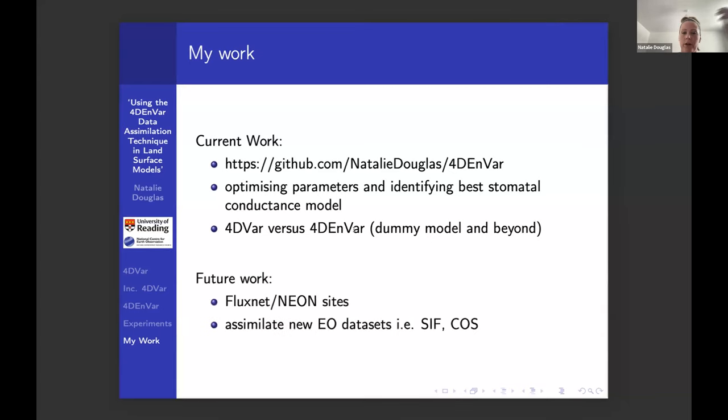Future work will include doing this for the observational information that's already available in some JULES suites, the FluxNet sites, and then some NEON sites that are being introduced. As the new datasets become available, solar-induced fluorescence and carbon monoxide, we'll be using those as the observational data as well. I'm just about to lose my voice today of all days. That's it. Thank you.